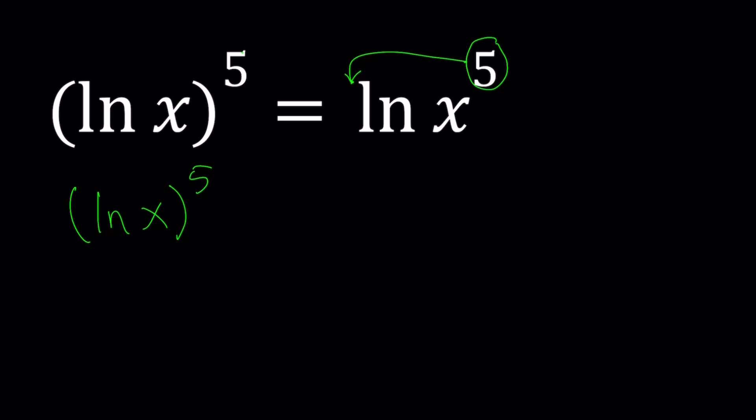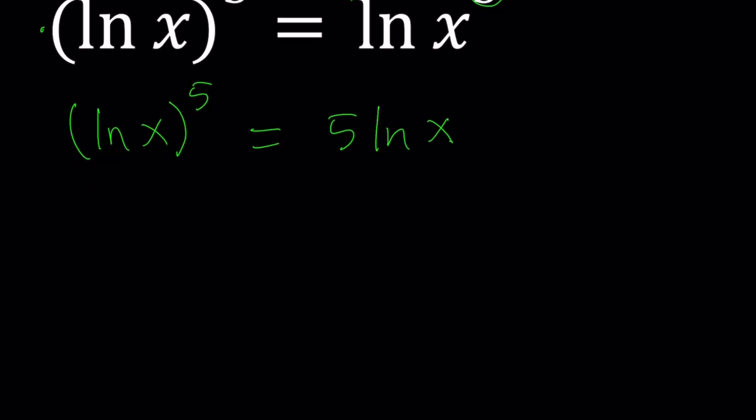This 5 you can't move to the front because this is not ln of something to the power. So that property doesn't work on the left hand side. So this gives us ln x to the fifth power equals 5 ln x. Now we can use substitution.